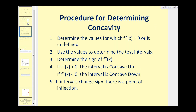Here's how we're going to determine concavity. We'll determine the values for which the second derivative is equal to zero or undefined — these will also be our possible points of inflection. Next, we'll use the values to determine test intervals based upon the domain or the given interval. Then we'll determine the sign of the second derivative in each interval. If it's positive, it's concave up; if negative, it's concave down. And if the intervals change sign, there is a point of inflection.